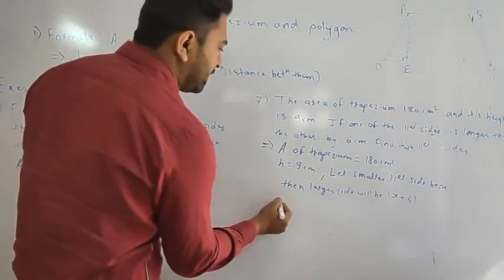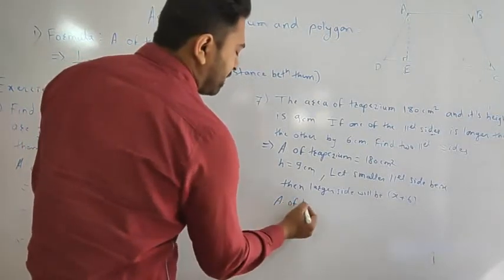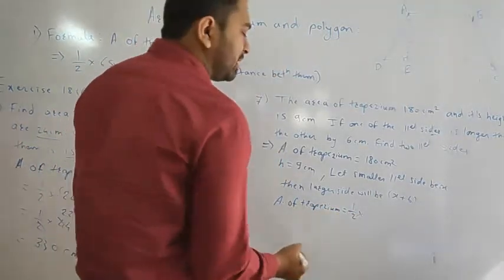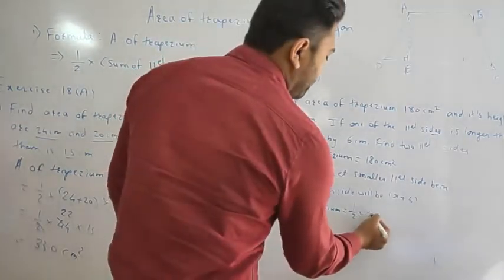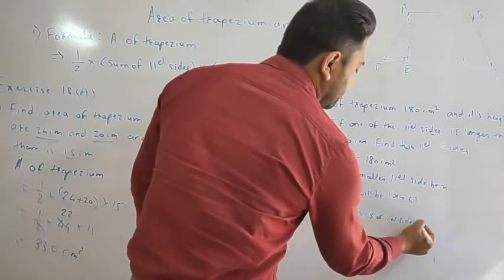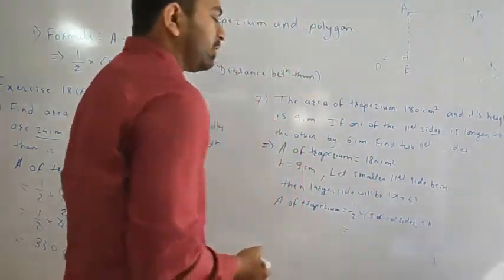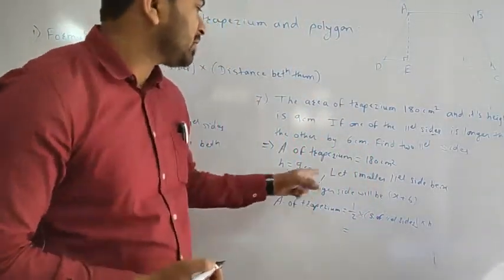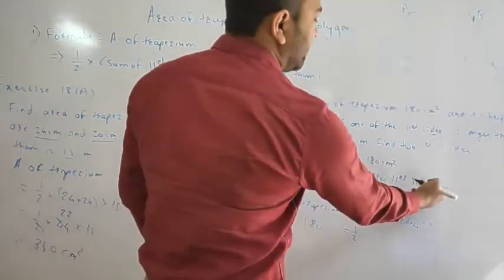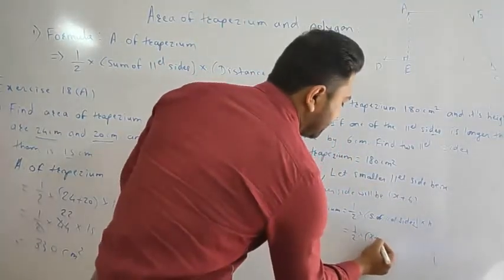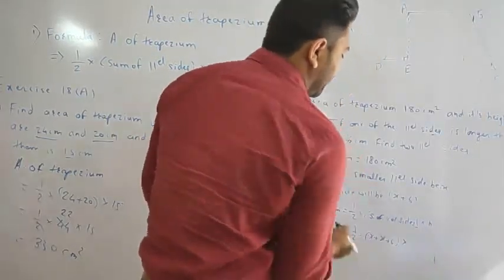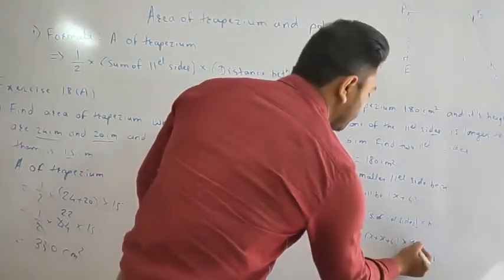Now we put these values into the formula for area of a trapezium: area equals half, multiplied by the sum of the parallel sides, multiplied by the height. The area is 180, the two parallel sides are x and x plus 6, so their sum is x plus (x plus 6), and the height is 9.